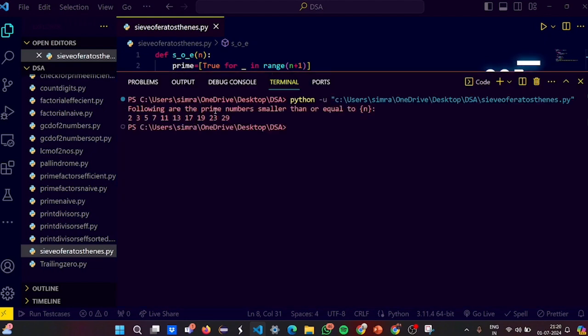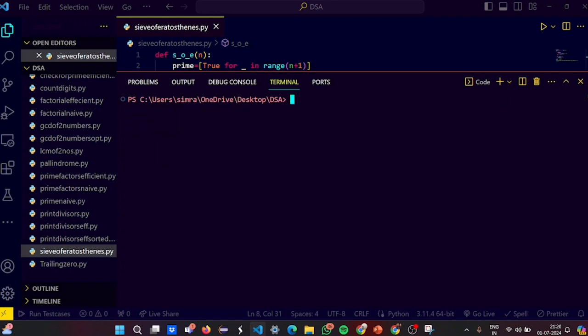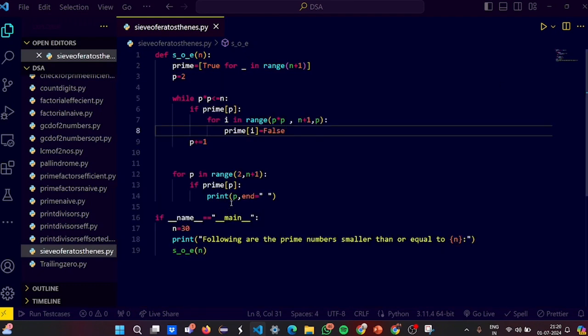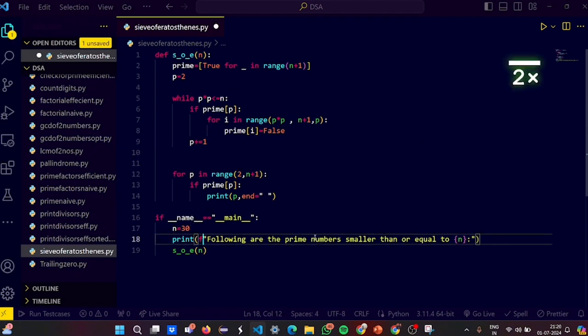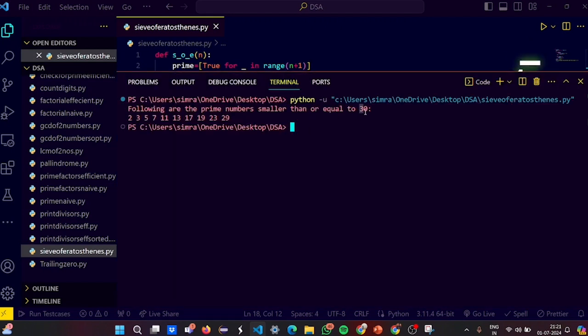So you got the prime numbers smaller than or equal to n are 2, 3, 5, 7, 11, 13, 17, 19, and 29. Guys I did an error here. As you can see that here I have missed an f. That's why the n was printed as n, not as 30. I did a mistake. I forgot the f. So here it is written correctly. These are the primes.